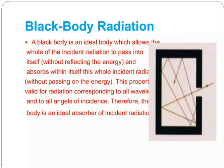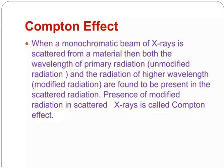Another important topic is black body radiation. A black body is an ideal body which allows the whole of the incident radiation to pass into itself without reflecting the energy, and this property is valid for radiation corresponding to all wavelengths and to all angles of incidence. Therefore, the body is an ideal absorber of incident radiation.